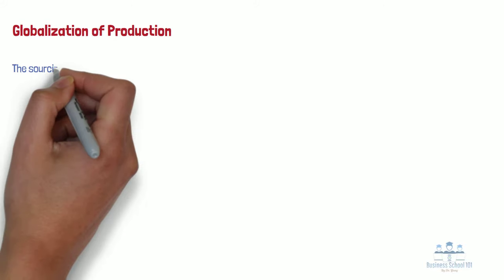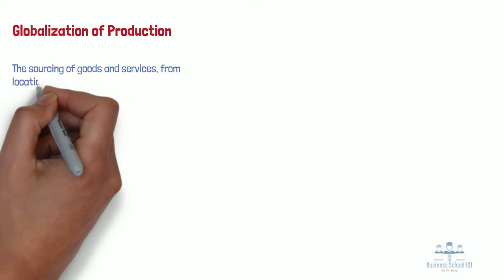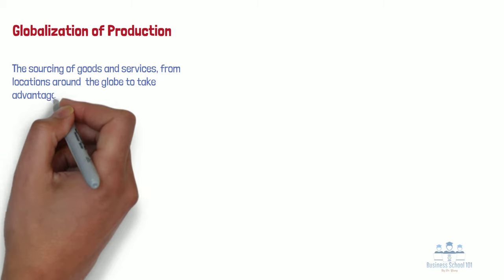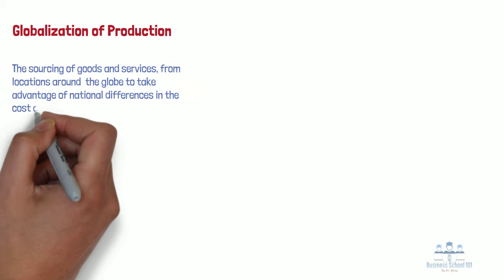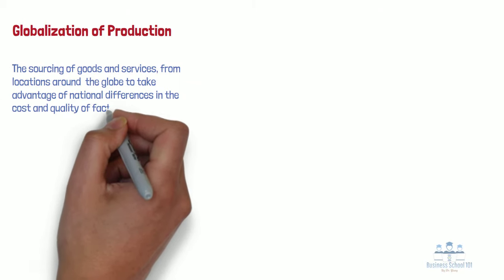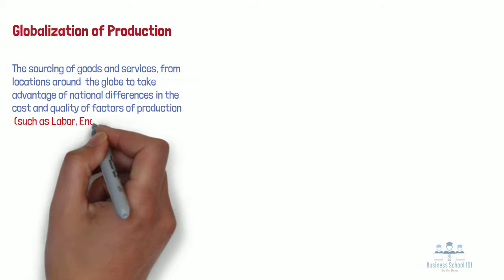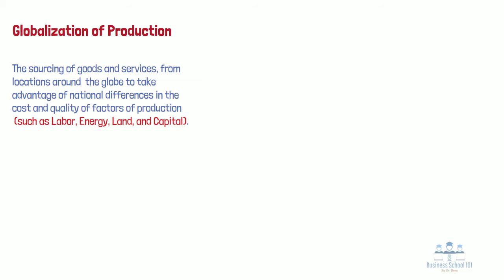The second facet of globalization is the globalization of production. Globalization of production refers to the sourcing of goods and services from locations around the globe to take advantage of national differences in the cost and quality of factors of production, such as labor, energy, land, and capital. By doing this, companies hope to lower their overall cost structure or improve the quality or functionality of their product offering, thereby allowing them to compete more effectively.